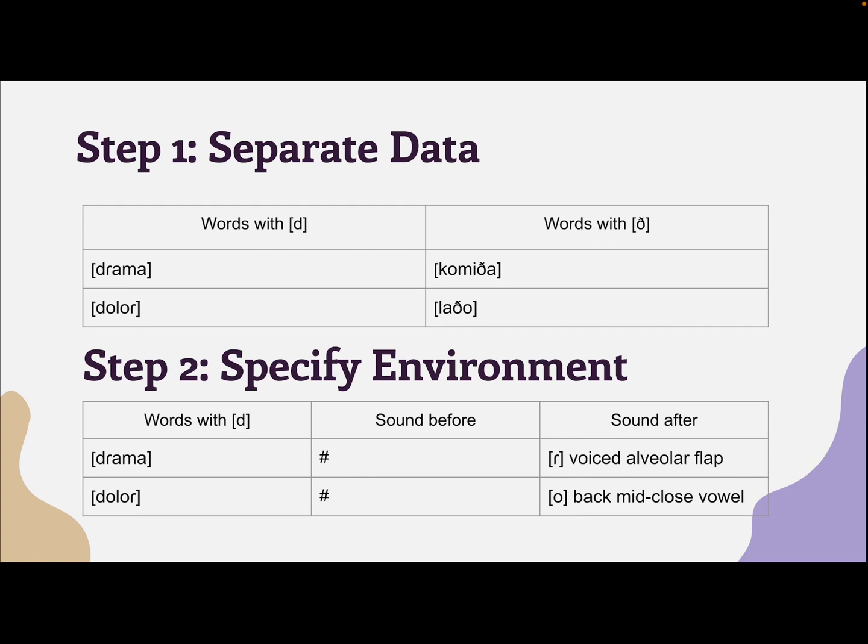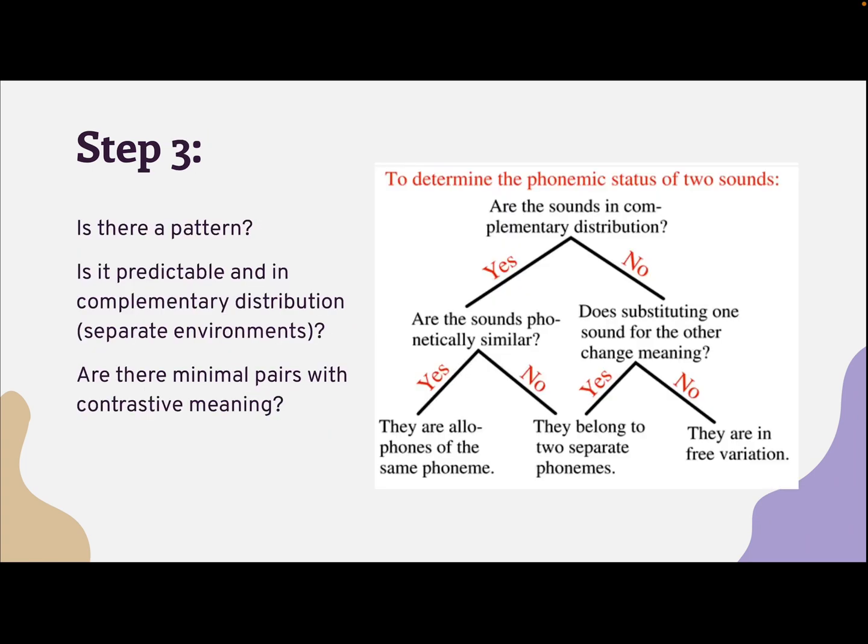Sometimes the pattern isn't as obvious. In that case, you might have to think about both before and after together, natural classes or suprasegmental features. Our last step is to see if there's a pattern and a rule. According to my chart, the plosive occurs at the start of the word and after L and N. The fricative occurs between vowels. The plosive seems hard to explain, but there's a clear pattern or environment for the fricative. Since I see a predictable pattern, I know I can write a rule. This phonological analysis found a rule and can conclude that these two phones are allophones.